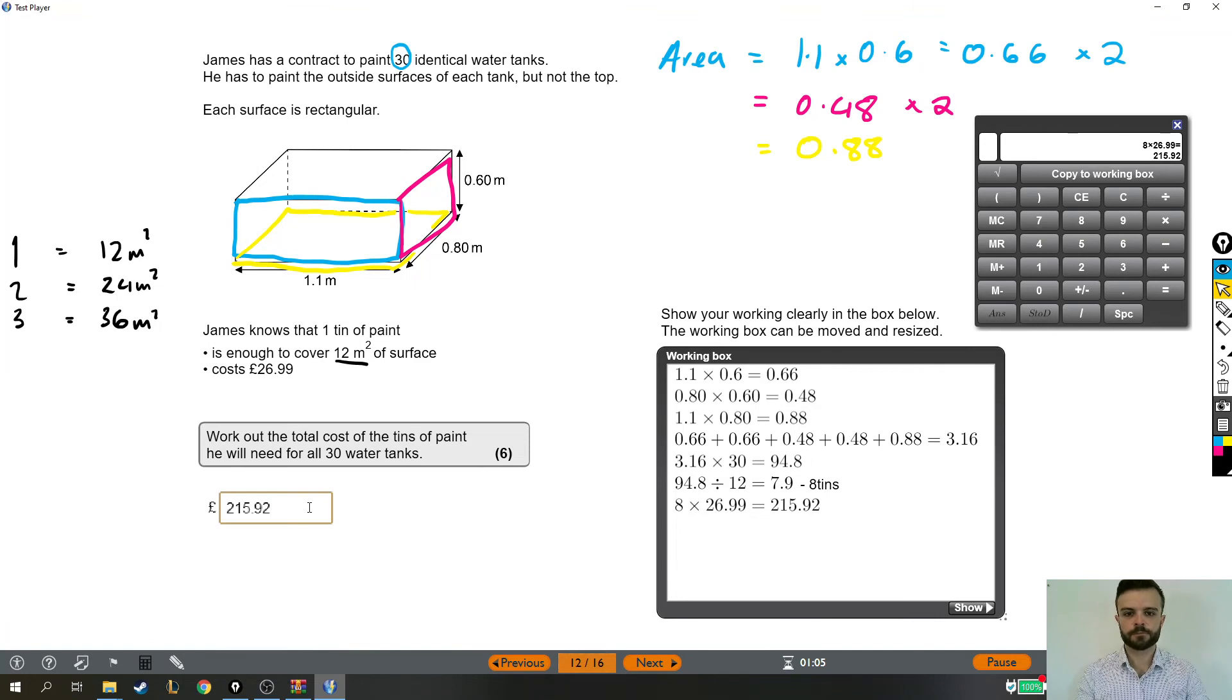So big question. The first few marks are going to be for doing the same thing a load of times, like finding the area of all those surfaces. Basically, they're just base times height - you just have to make sure you picture the right base and the right height. Add them all together to get the surface area that needs painting of one tank, multiply that by 30 for 30 tanks, then find out how many tins you need by dividing by 12, and finally just multiply how many tins you need by the cost of one tin. So quite a big question. Hopefully that all made sense. Hope that helps. On to the next question.